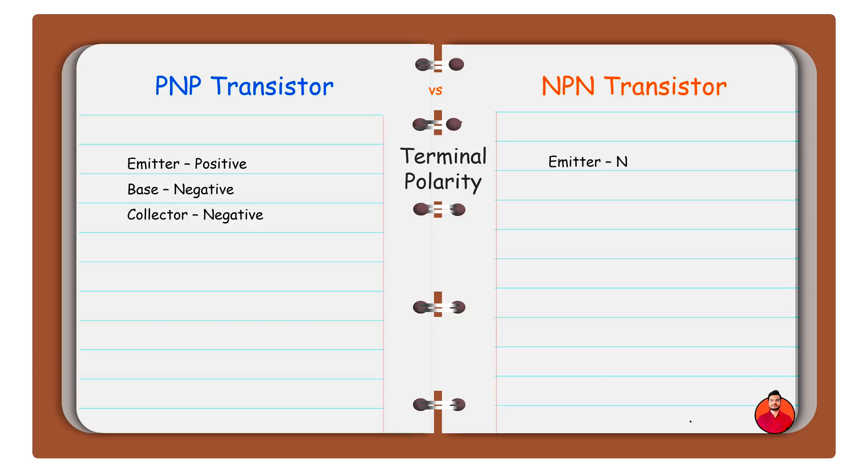In PNP transistor, emitter is negative, base is positive and collector terminal is positive.